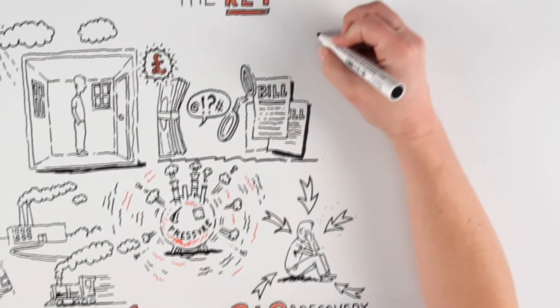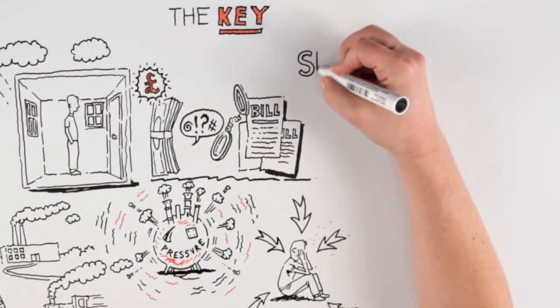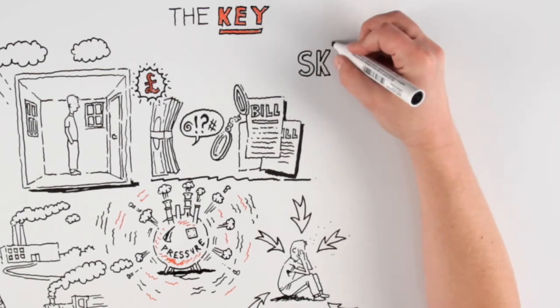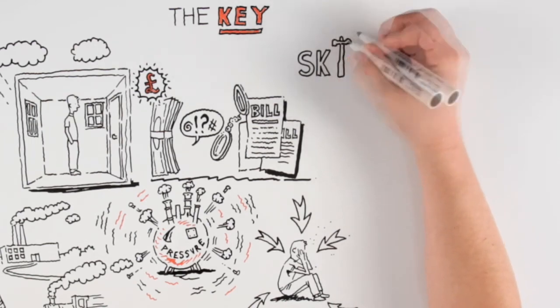Phase two is about reducing the line outside the door and teaching you the skills to control pressures, so that when they return, you'll know how to respond.